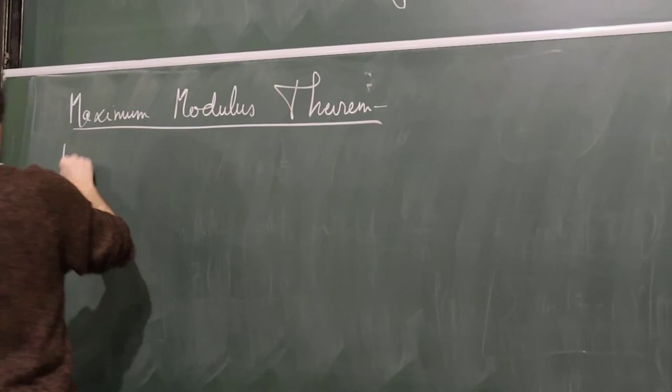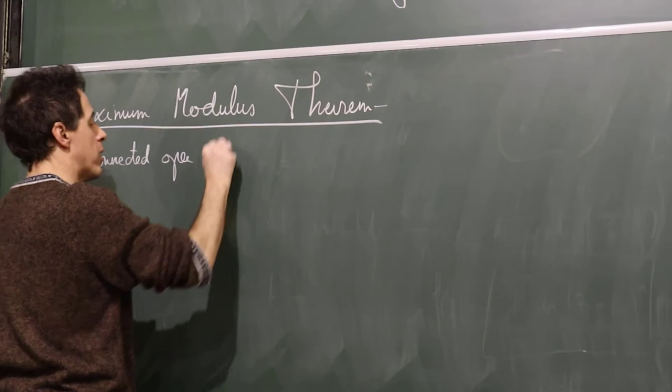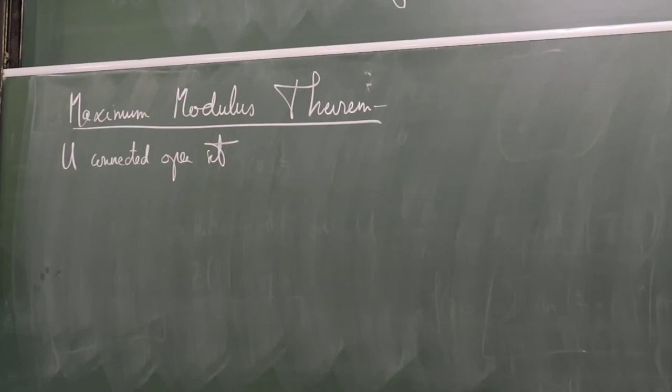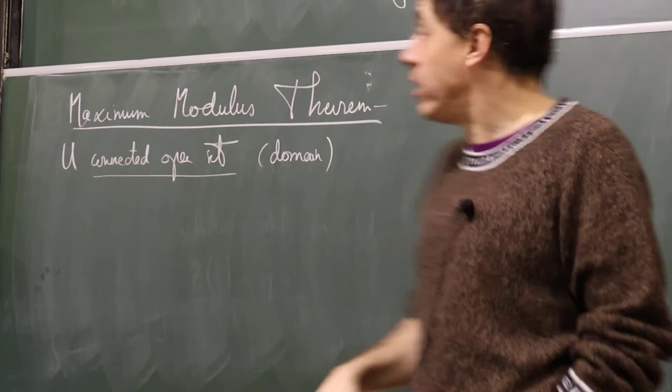Assume U is a connected open set — sometimes such sets are simply called domains. We consider a holomorphic function defined on U. Since these are complex functions, to speak of maxima and minima we consider the modulus, which is a real function.